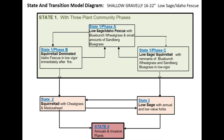It might have gotten out of State 1. It may be in State 2, which is squirrel tail with cheatgrass and medusahead. Or maybe it's in State 3, which is low sage with annual and low value forbs. Or perhaps it's in State 4, which is annuals and invasive plants.